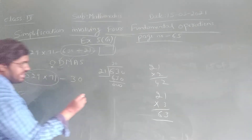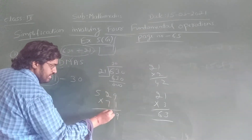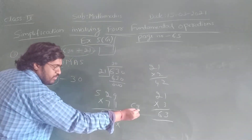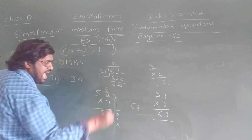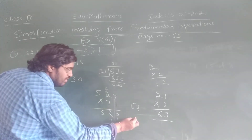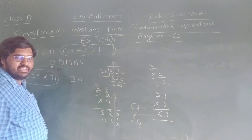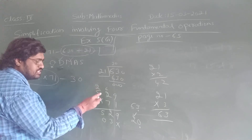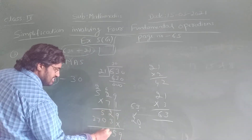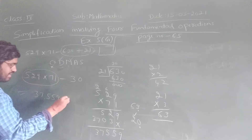So I am going to multiply 529 into 71. 1 times 529 is 529. Then 7 times 9 is 63 — write 3, carry 6. 7 times 2 is 14, plus 6 is 20 — write 0, carry 2. 7 times 5 is 35, plus 2 is 37. So the second row is 3700. Adding: 529 plus 37000 gives 37,559. So 37,559 minus 30.